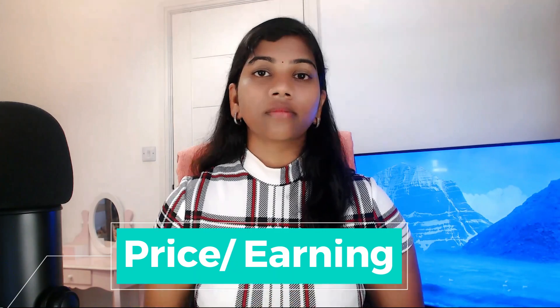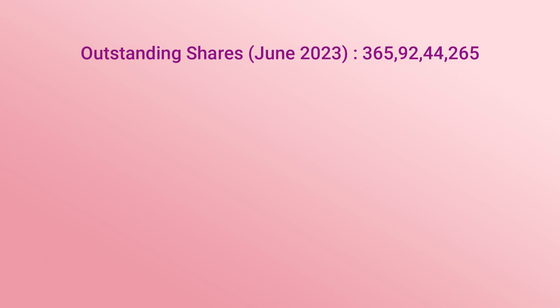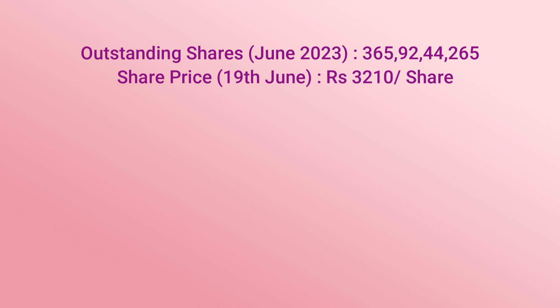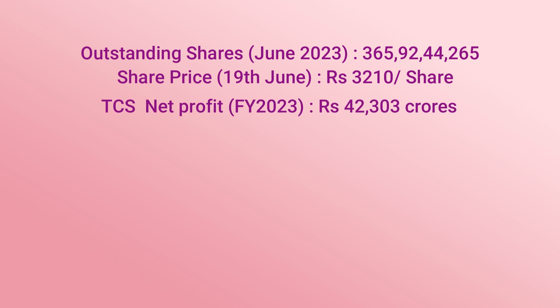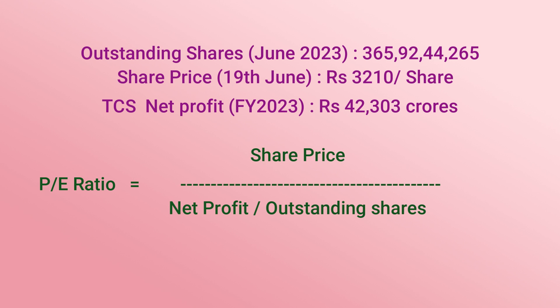The P/E ratio, which stands for Price-to-Earnings ratio, is one of the most straightforward and popular multiples. We simply take the stock price and divide it by the company's earnings per share. For example, TCS has approximately 365 crore and 93 lakh shares outstanding, each trading at 3,210 rupees per share on 19th June, and their last year's net income was 42,303 crore rupees. Taking the direct value from Moneycontrol, TCS's P/E ratio is 27.88.